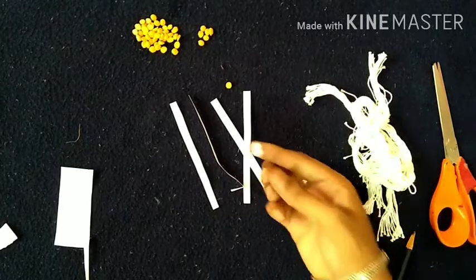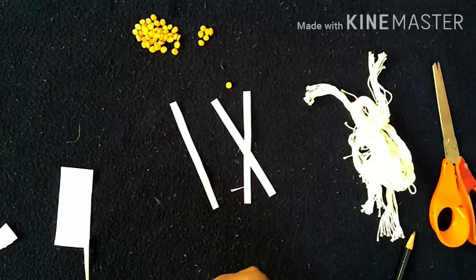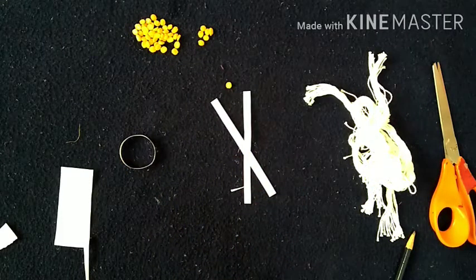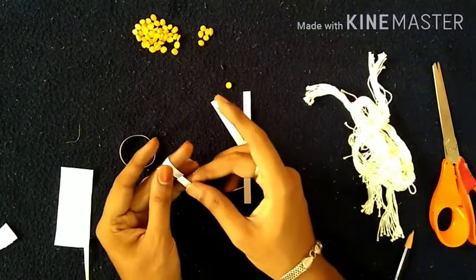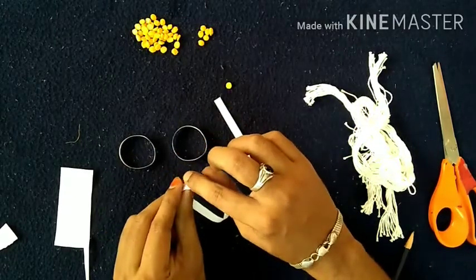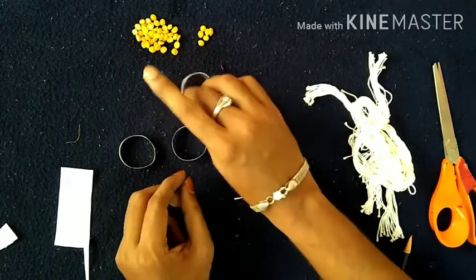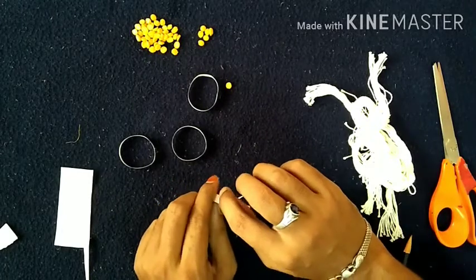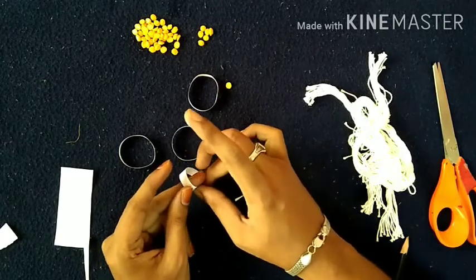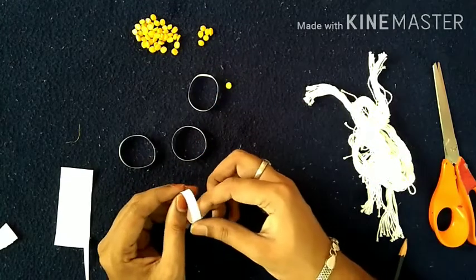Now take glue. One corner I am applying glue, I am sticking this one. Like this. In the corner apply glue and stick that one. Same with this one also. Apply a little bit of glue and stick this one. Like this. Make four rings.